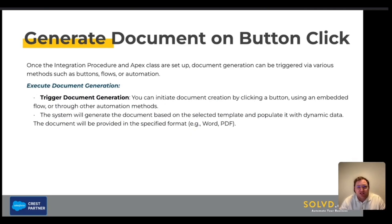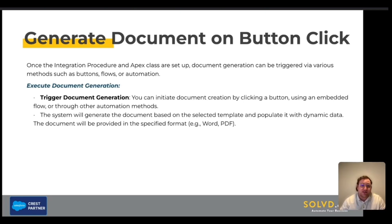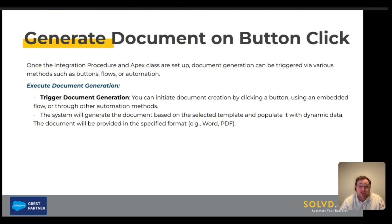Once the integration procedure and Apex class are set up, document generation can be triggered via various methods such as buttons, flows, or automation. Most often we will see Apex actions being used in flows. The system will generate the document based on the selected templates and populate it with dynamic data, then provide the document in the specified format — for example, Word or PDF.